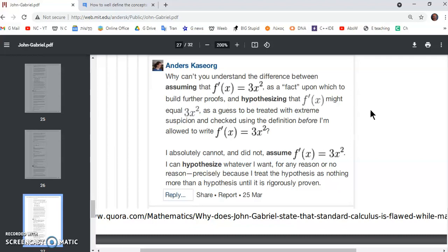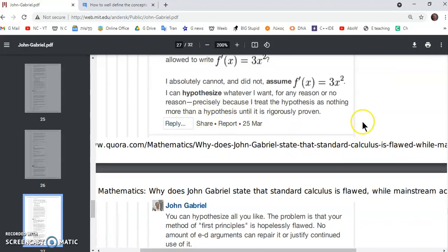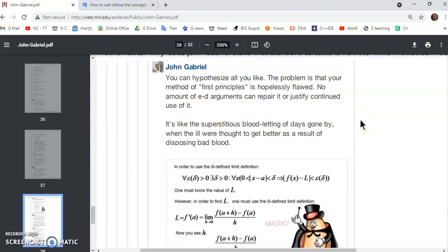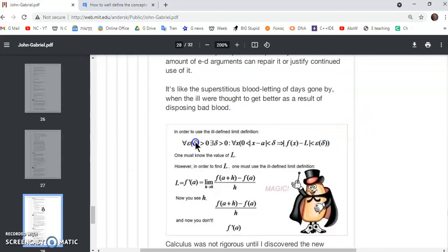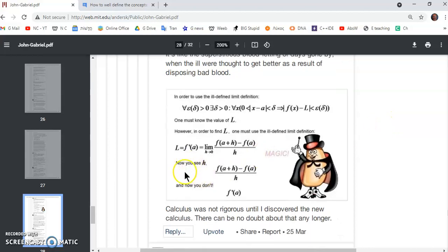You have to break away from the original definition of tangent line in order to use that, and you introduce the circular limit definition which you commonly use as your derivative. Then he says, I absolutely cannot and did not assume that. And I can hypothesize whatever I want for any reason or no reason, precisely because I treat the hypothesis as nothing more than a hypothesis until it is rigorously proven. Now, this is the problem, people. You see this here that you see in front of you is that famous first principles definition. Now, yes, some of you might argue that you can't express epsilon as a function of delta. You can, by the way. I proved that you can and vice versa. But I'm not going to argue about that. Now, you have to know the value of L. So systematically, there's no way you can find the derivative in your bogus calculus.